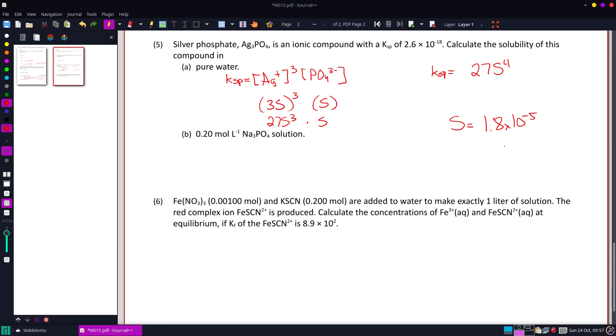On B, we're going to do that same thing, but now we want to add some sodium phosphate in there. So the Ksp would technically be the exact same thing. But what we're going to do is when we plug in our S's now, this is still 3S. We're not doing anything to the silver. But the phosphate is going to have 0.2 molar in there with it.